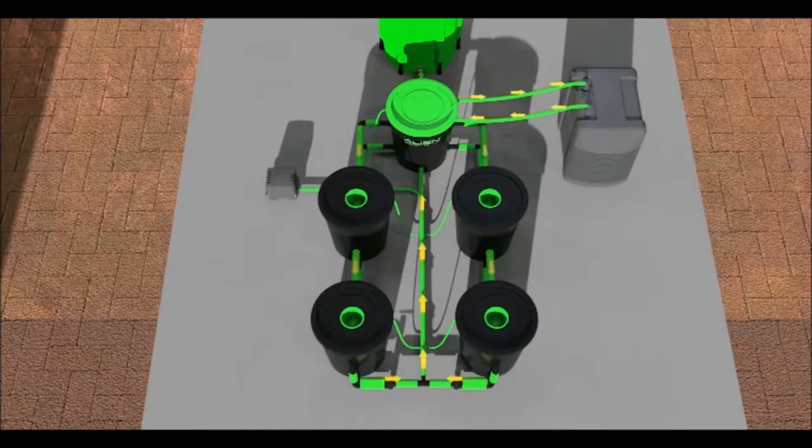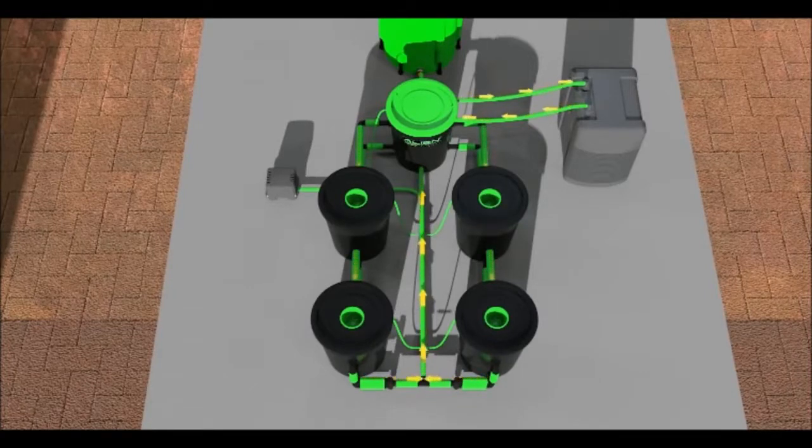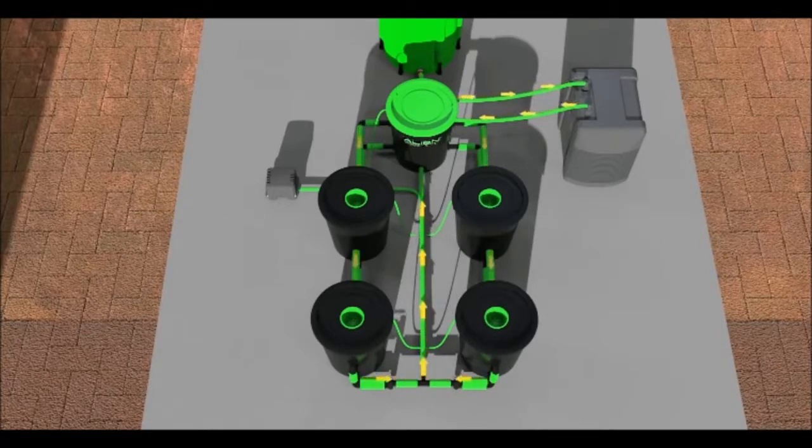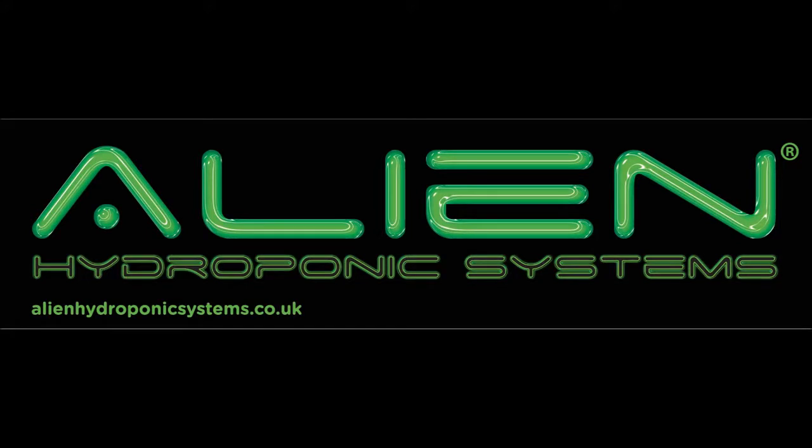Simply adding H2O2 solution to a system full of clean water and letting it recirculate overnight will clean and sterilize the system between crops. Thank you for watching and please visit our website alienhydroponics.co.uk for further information.